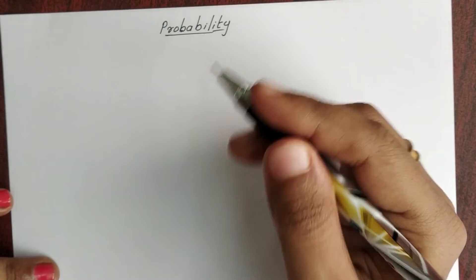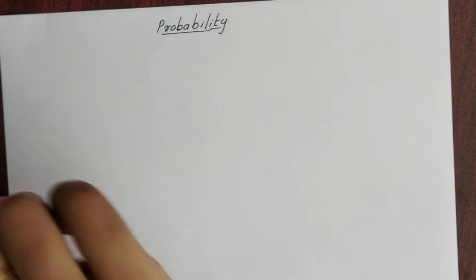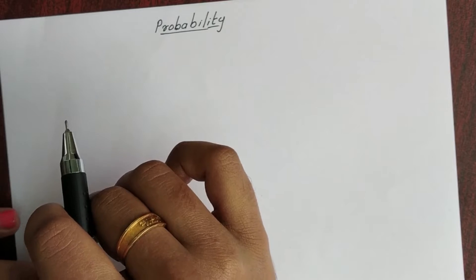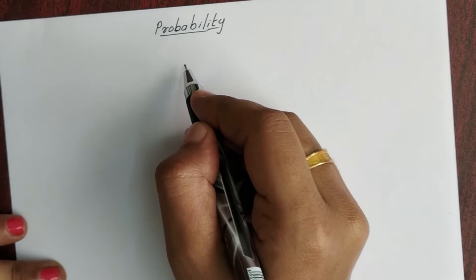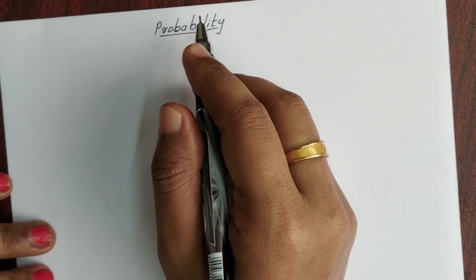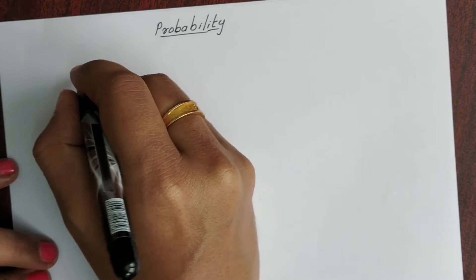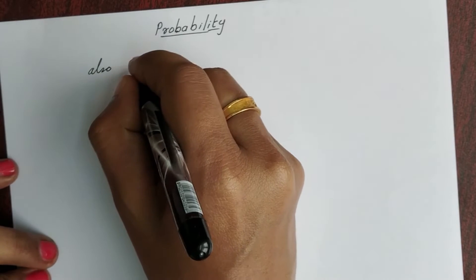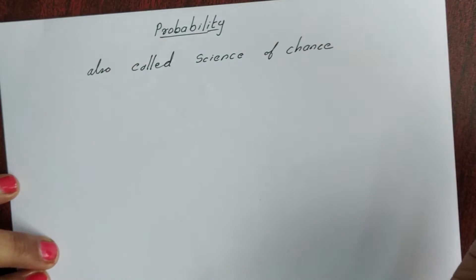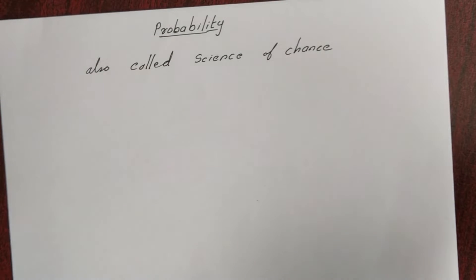We will learn a little bit about the definition. Probability is also called the science of chance. Science of chance.